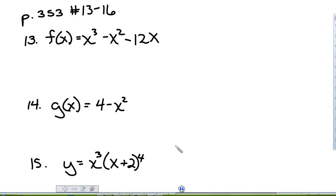In this video I'm going to show you how to do questions 13 through 16 on page 353. Number 13 says to write each polynomial function in factored form, list the zeros of the function and their multiplicity, find any relative max or relative minimum values.